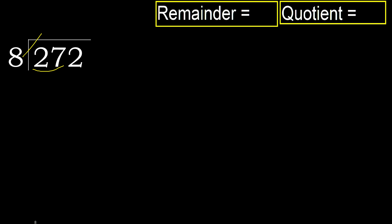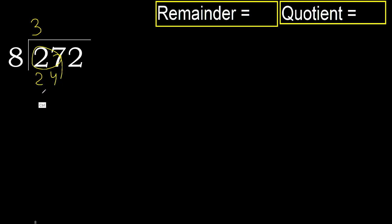But not greater. 8 multiplied by 4 is greater. 8 multiplied by 3 is 24, which is not greater. Ok, subtract. 3, next.